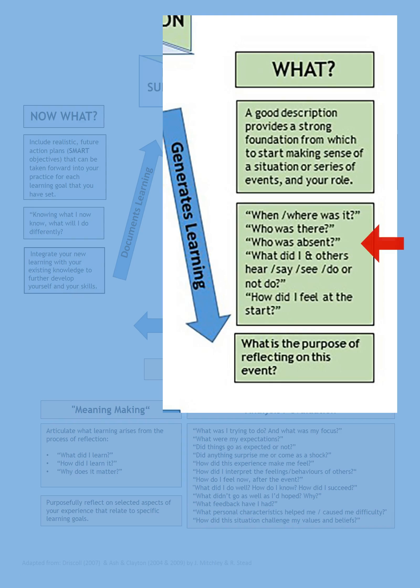So the kinds of questions that you want to ask and answer in a written reflection are when and where the event took place, who was there, but also who might have been absent, because that may be relevant. What you did and what others did, but also what you heard, what you said, what you saw, and also what you didn't do, because there may be things that you left out or forgot to do.